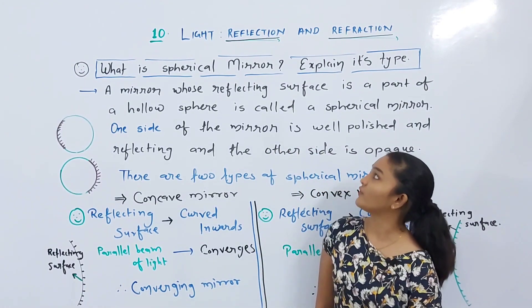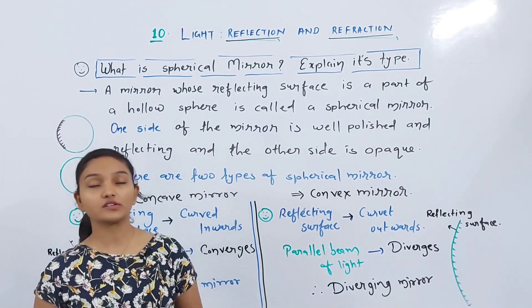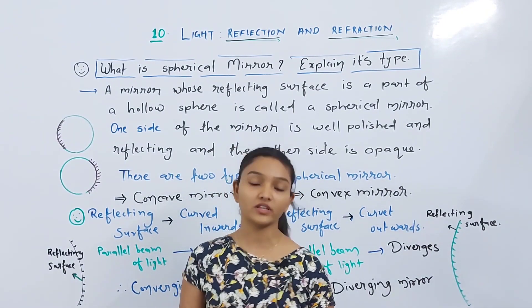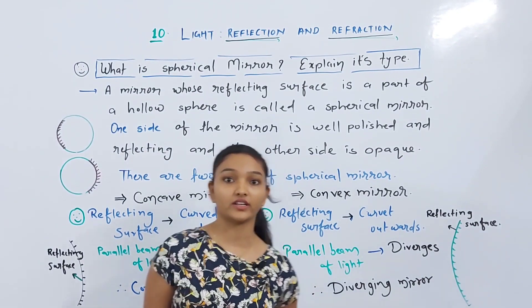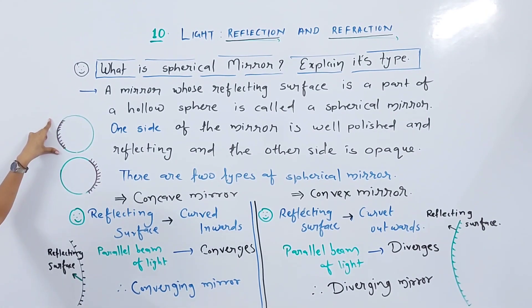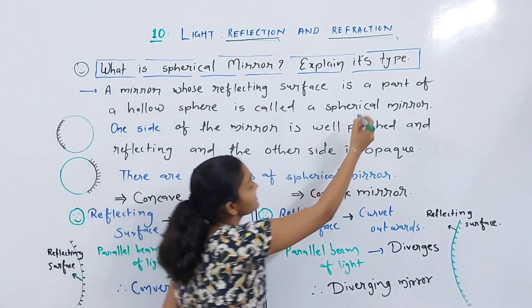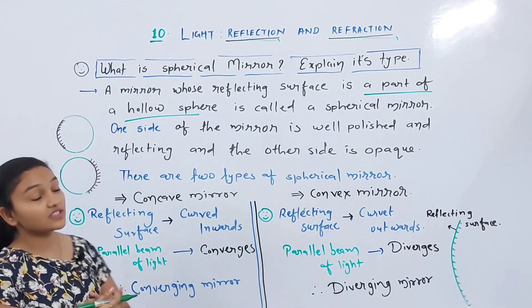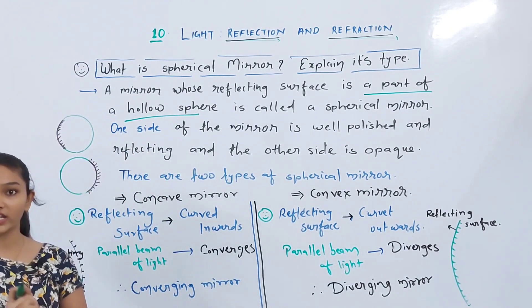Our today's topic is what is a spherical mirror and its types. When we talk about a spherical mirror, we are not talking about the whole sphere, just a part of it. A mirror whose reflecting surface is a part of a hollow sphere is called a spherical mirror.